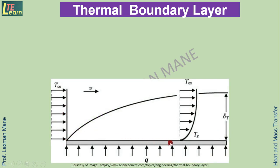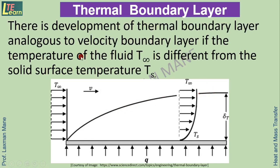Thermal boundary layer: here we have a gas flowing over a flat plate. The temperature of the free stream is T∞ and the temperature of the surface is Ts. Moving normal to the flat plate, temperature increases and finally reaches the free stream temperature T∞. The thermal boundary layer is the curve shown, analogous to the velocity boundary layer, and it develops when the fluid temperature T∞ differs from the solid surface temperature Ts.